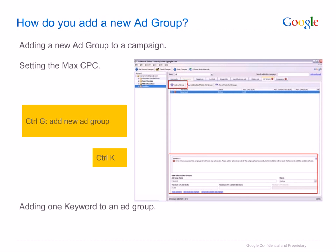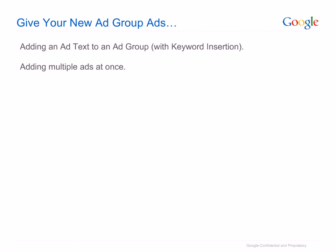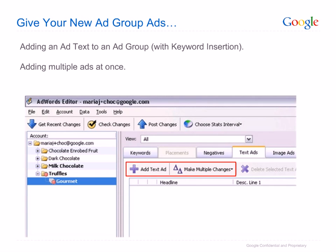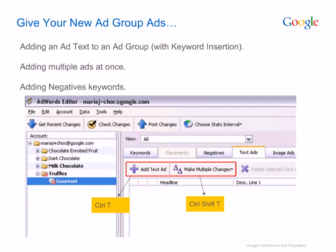Press Ctrl+K to add a keyword to this ad group. You can generate a list of keywords using the AdWords keyword tool. Press Ctrl+Shift+K to add multiple keywords to this ad group. To add an ad text to this ad group, click on the Add Text Ad button at the ad group level. It is possible to add multiple ad texts at once by clicking on the Make Multiple Changes button. For a shortcut to add new ad texts, press Ctrl+T. To add multiple new ad texts, press Ctrl+Shift+T. If you wish to add negative keywords, press Ctrl+M. To add multiple negative keywords, press Ctrl+Shift+M.